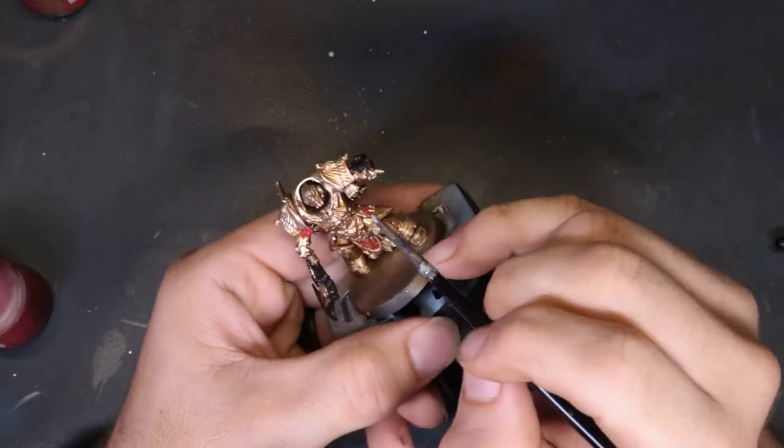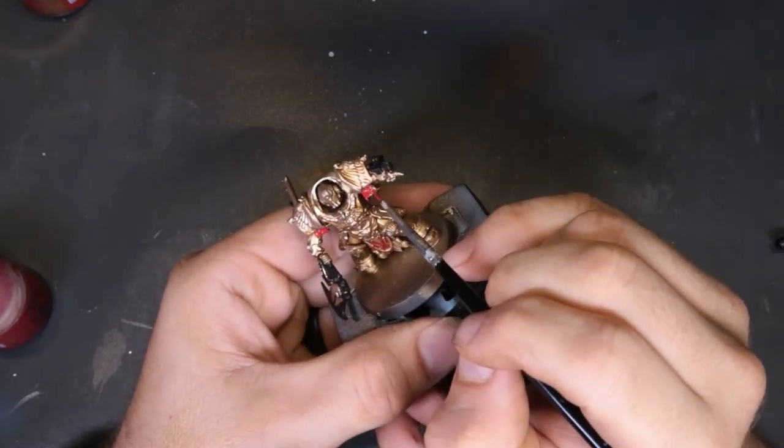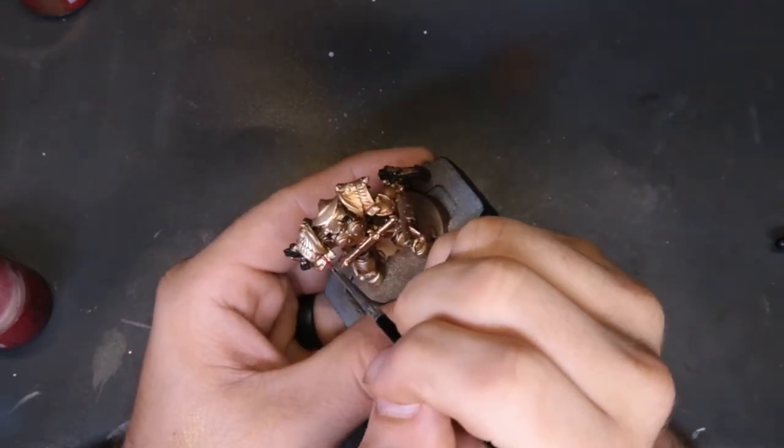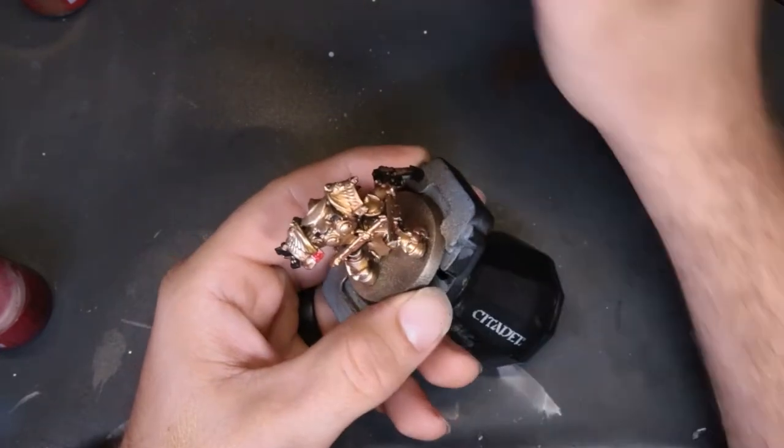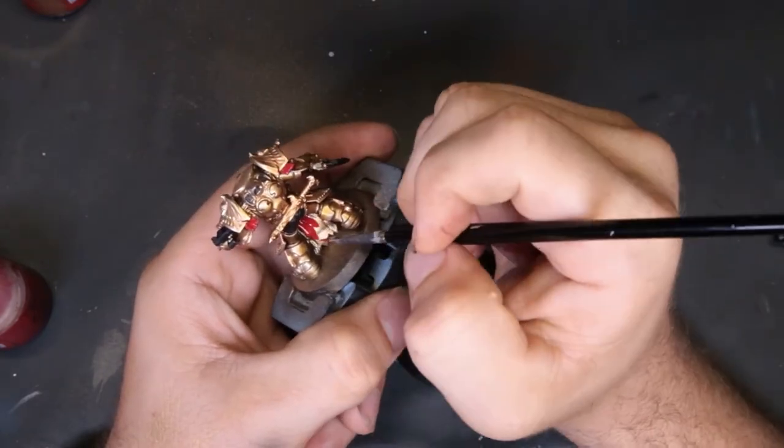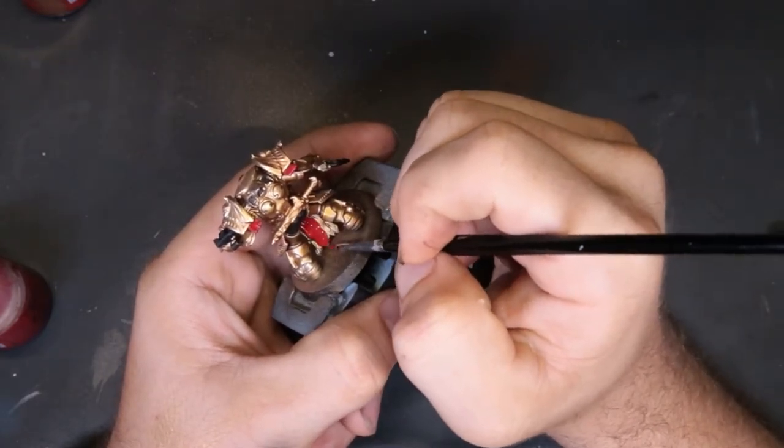We're going to make sure we line those out with Mephiston Red. We will come back through later, we'll mat these down with some shades and stuff like that, deepen the recesses, but this will definitely give us a good starting point. Also, if you're feeling froggy, you can see where the leather red bits are under his shoulder pads and you can actually get to those. Make sure those get painted. Worth the time in my opinion.